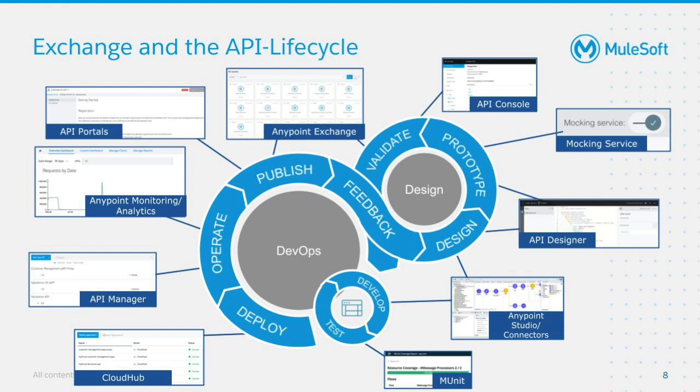By adding assets to Exchange, organizations can drive collaboration by empowering users with the right access to experiment, validate, and continuously improve the assets and APIs through feedback. Organizations can also customize the descriptions and images to brand and curate developer experiences. With Anypoint Exchange, users can also create auto-generated Exchange portals using vanity domains to share APIs with internal, external, and select users.